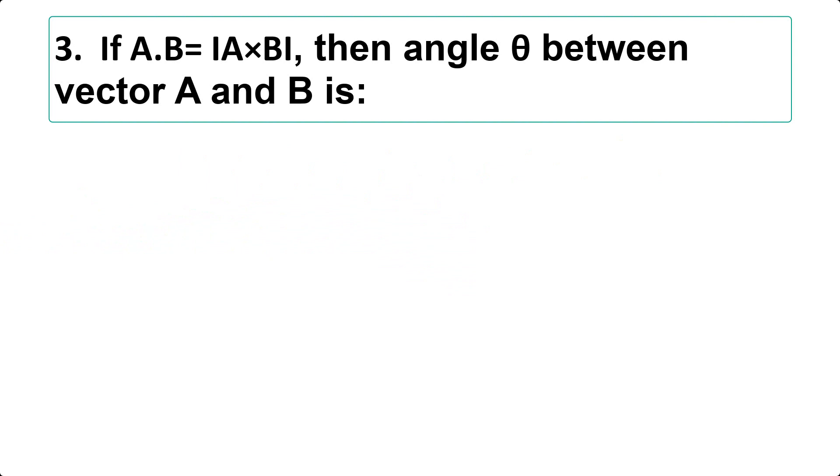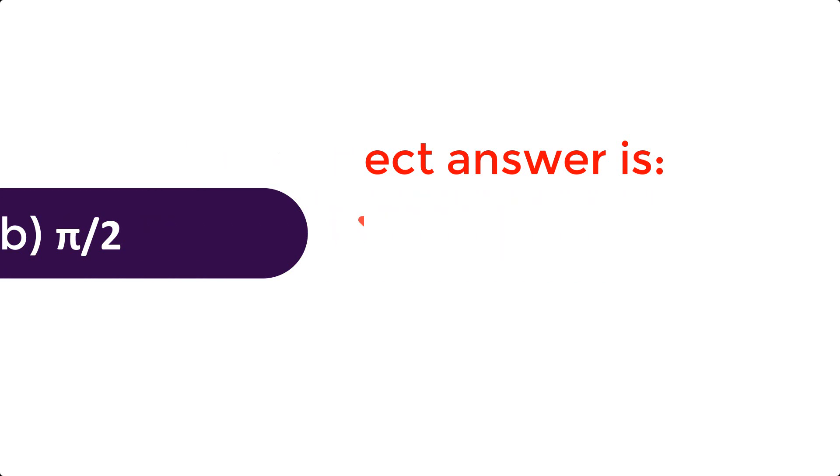If A.B equals |A×B|, then angle theta between vector A and B is: A. 0 B. Pi by 2 C. Pi by 4 D. Pi. The correct answer is B. Pi by 2. Question 2.